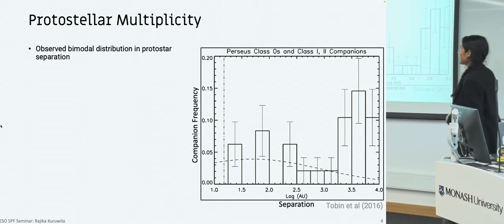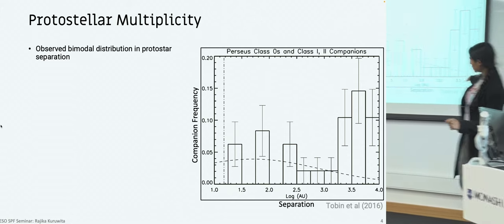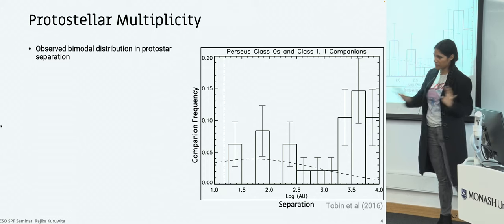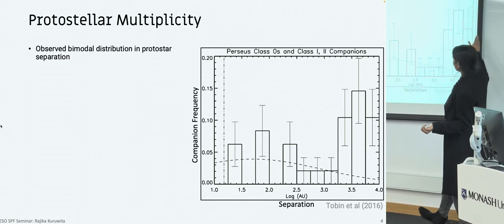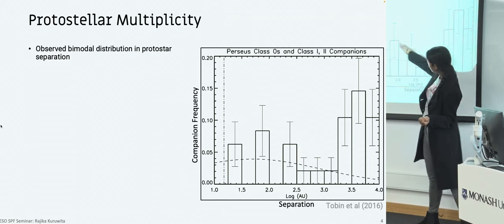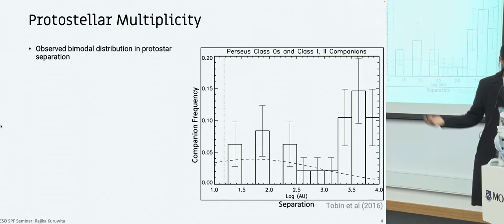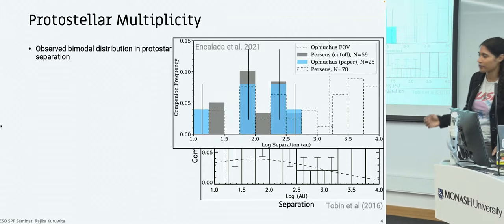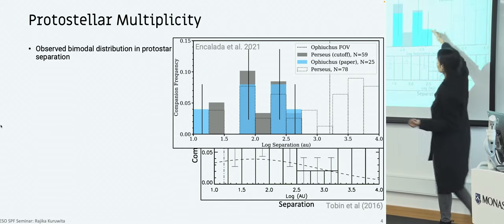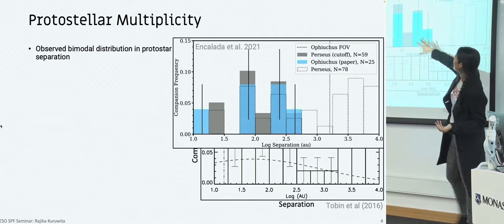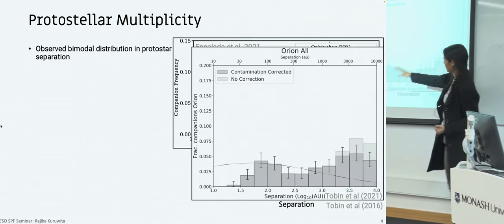For protostellar multiplicity, there was a discovery in 2016. The x-axis is separation in log space and the y-axis is companion frequency — another measure of multiplicity. What was found was a bimodal distribution with one peak at about 75 AU and another peak at around 3000 AU. We're possibly seeing this in other regions too: the original observations were in Perseus, some observations in Ophiuchus, and in Orion we're also getting a sort of bimodal distribution.